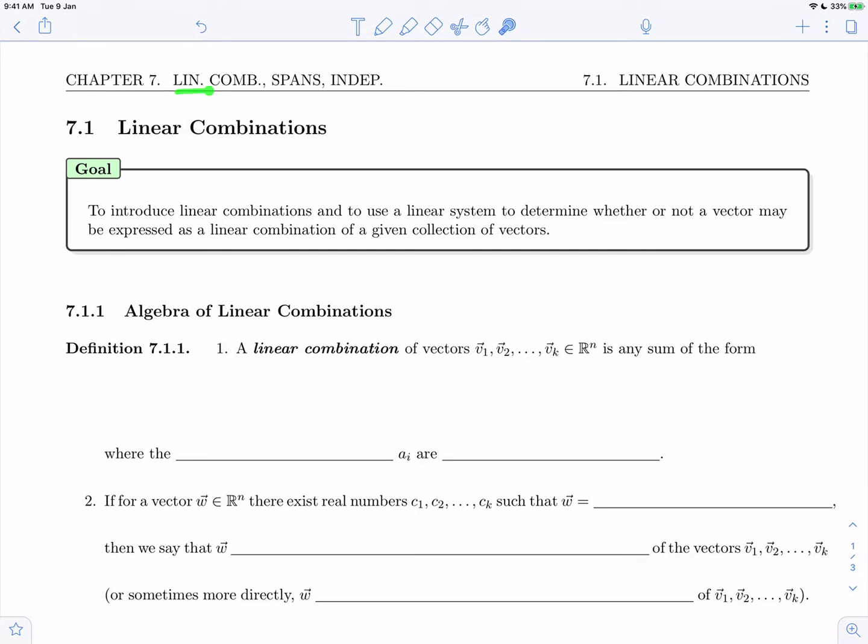Welcome to Chapter 7 on Linear Combinations, Spans, and Independence. In this video we're going to start Section 7.1 on Linear Combinations. In particular, the goal of this section is to introduce linear combinations and then to use a linear system to determine whether or not a vector may be expressed as a linear combination of other vectors.